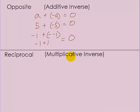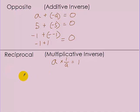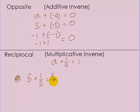Real numbers also have reciprocals — that's the multiplicative inverse. If you have a number A and multiply it by its inverse, 1 divided by A, this always comes out to 1. For example, 5 multiplied by its reciprocal, 1 fifth, comes out to 5 over 5, which reduces to 1.